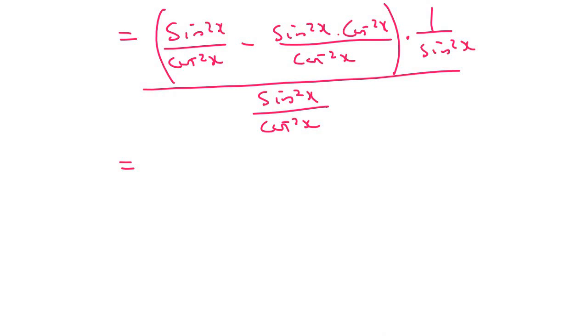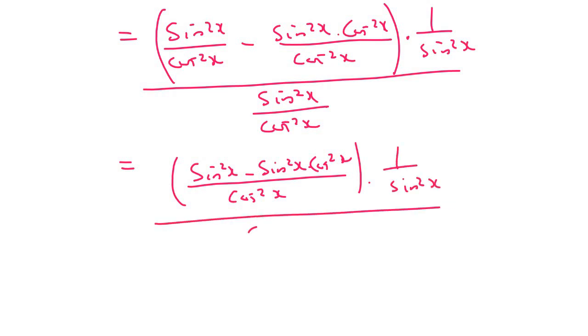At the top here, everything's over cos²x, and that becomes sin²x minus sin²x times cos²x. You can't cancel these because it's not one term over one term. This part is still just 1 over sin²x, and there's nothing we can really do at the bottom.